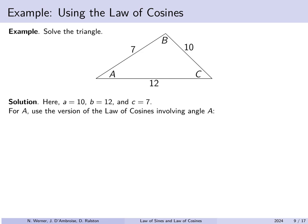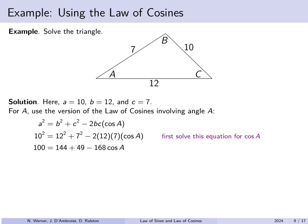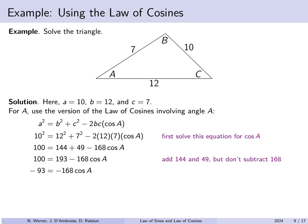For angle A, we use the version: a squared equals b squared plus c squared minus 2bc times the cosine of A. We know a, b, and c; the only unknown is angle A. Plugging in: we add 144 plus 49 to get 193. A very common mistake is to now compute 193 minus 168, but you don't have 168 in the expression — you have 168 times the cosine of A. You cannot ignore that cosine term. Instead, subtract 193 to the other side and divide by minus 168. Taking the arc cosine of negative 93 over negative 168 gives angle A approximately 56.4 degrees.